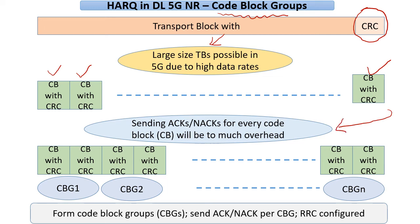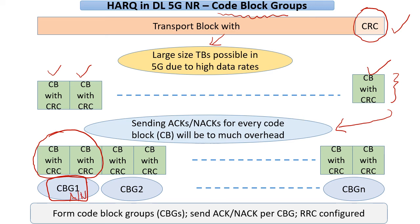Sending an ACK/NACK per code block would be too many ACK/NAKs to send. The alternative in LTE was that we never sent an ACK/NACK for code blocks — we sent an ACK only for the transport block. In 5G NR we have an intermediate idea: we can group a bunch of code blocks — I have shown two as an example — into another entity which is new in 5G, called a code block group. These code block groups, configurable by RRC, can now have their individual ACK/NACK. This becomes an intermediate step where we do not act at the level of code block or go very coarse at the transport block level — we can do something intermediate and configurable.